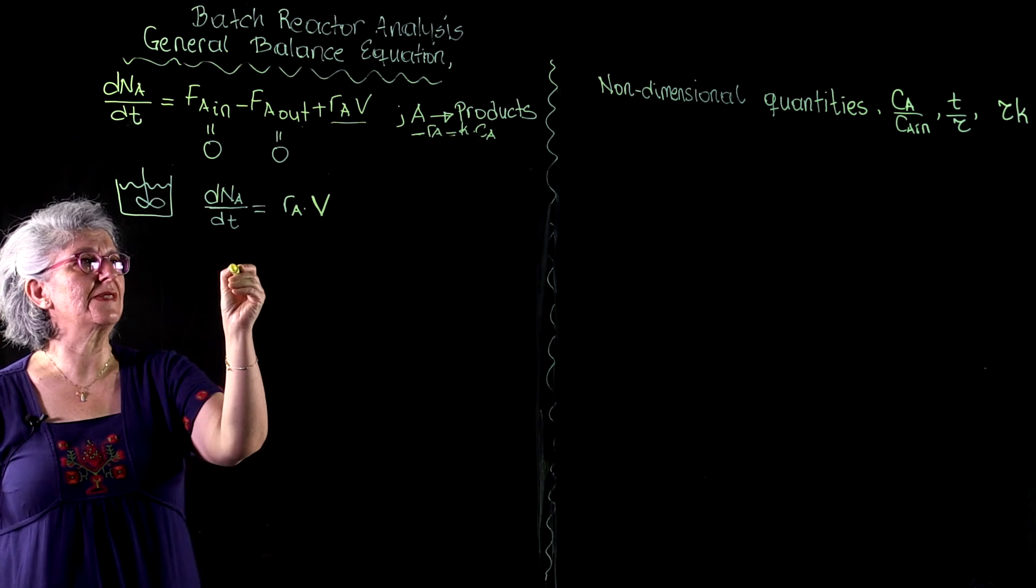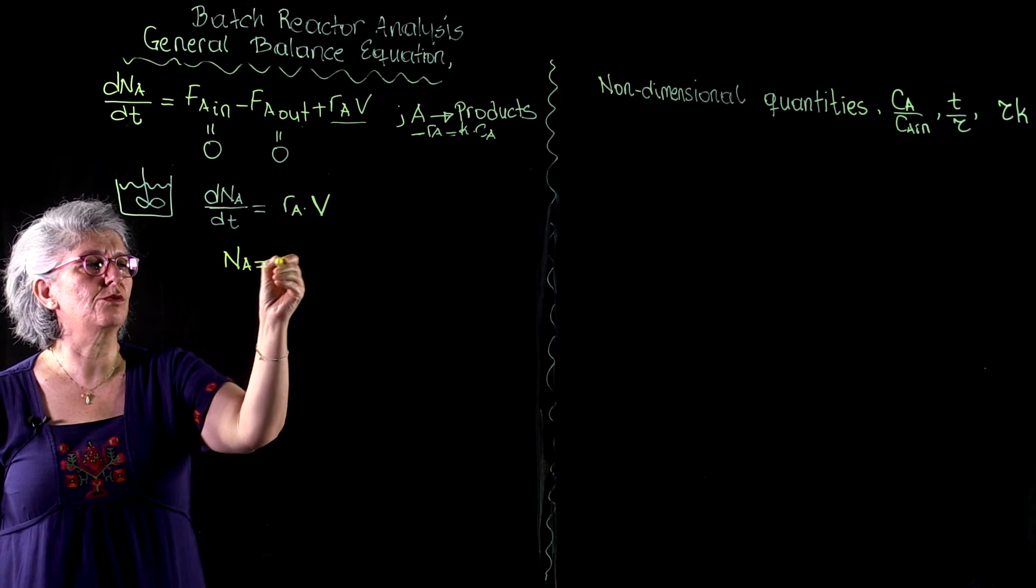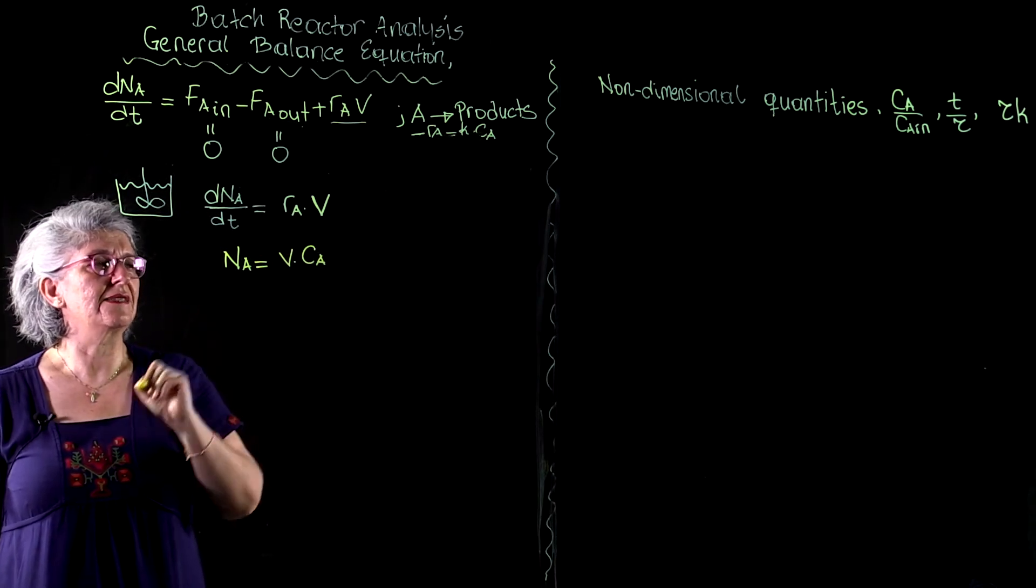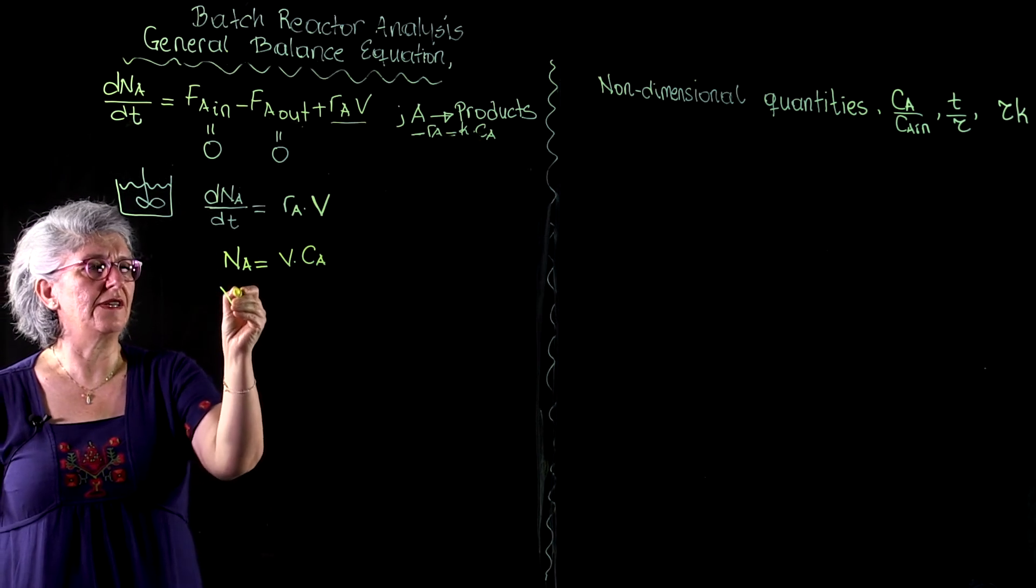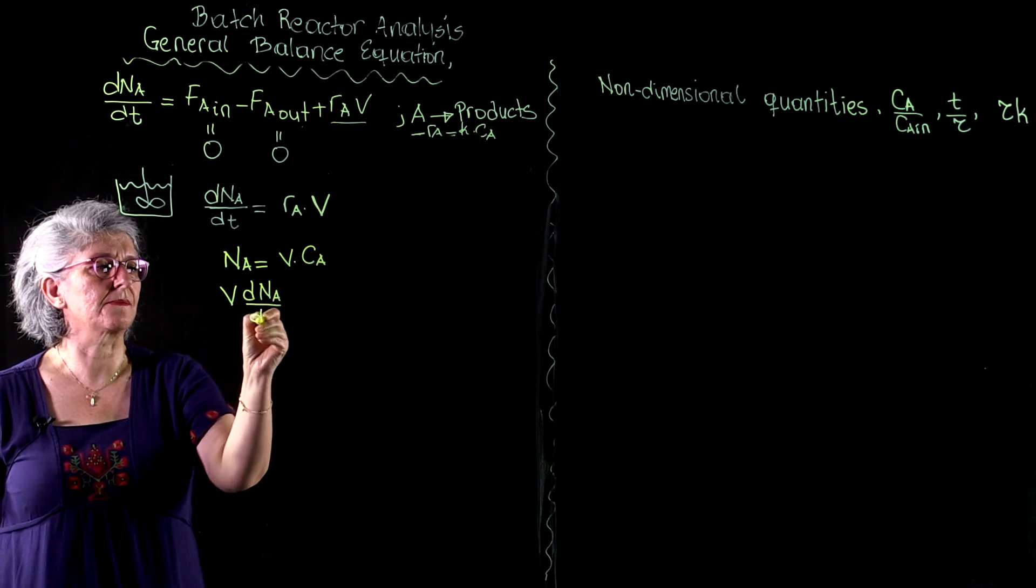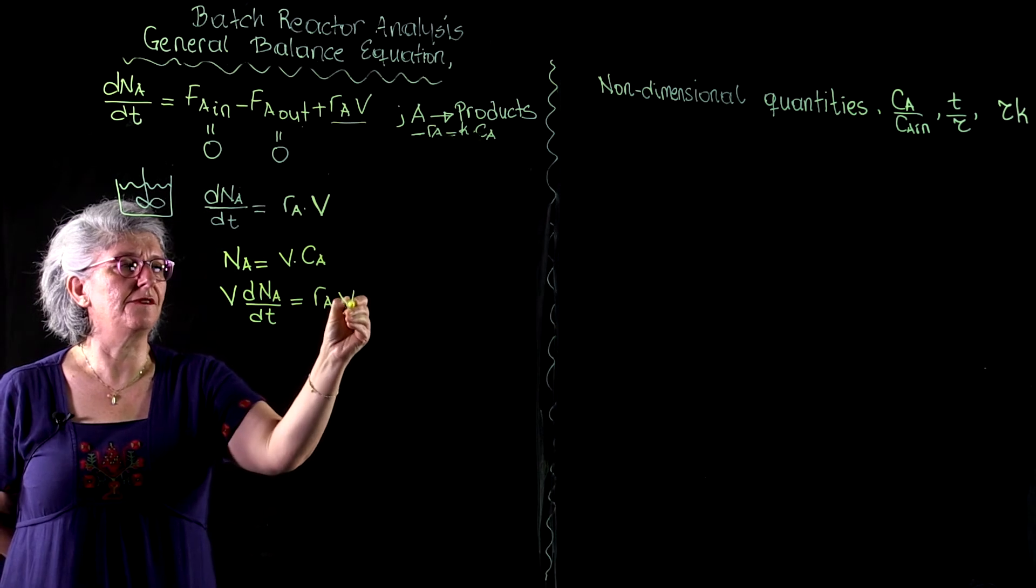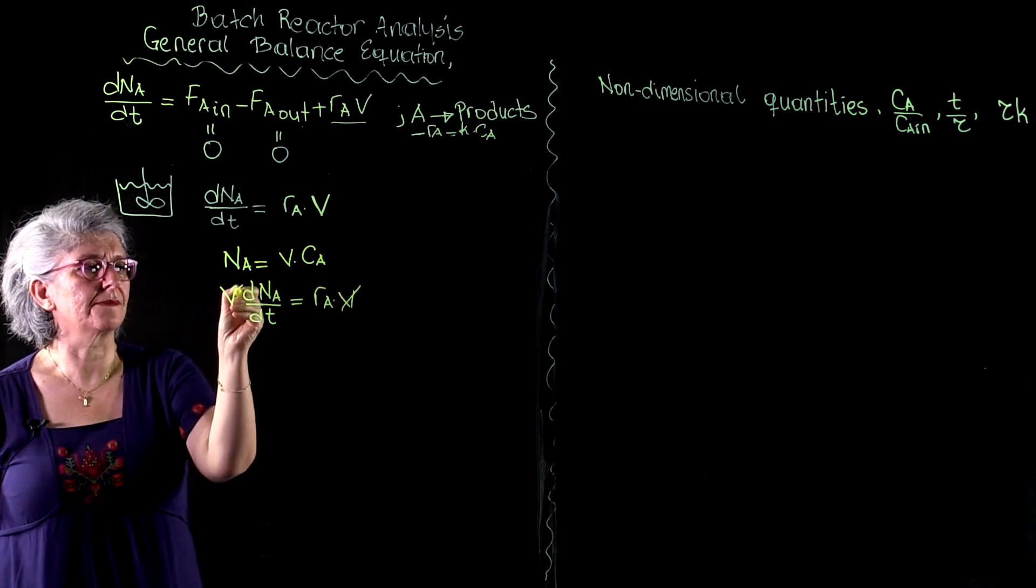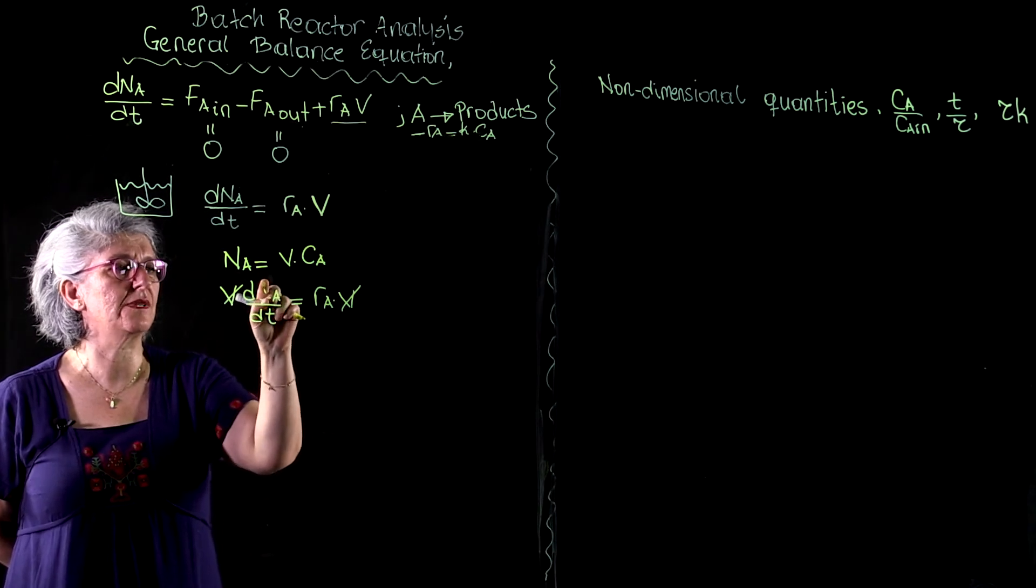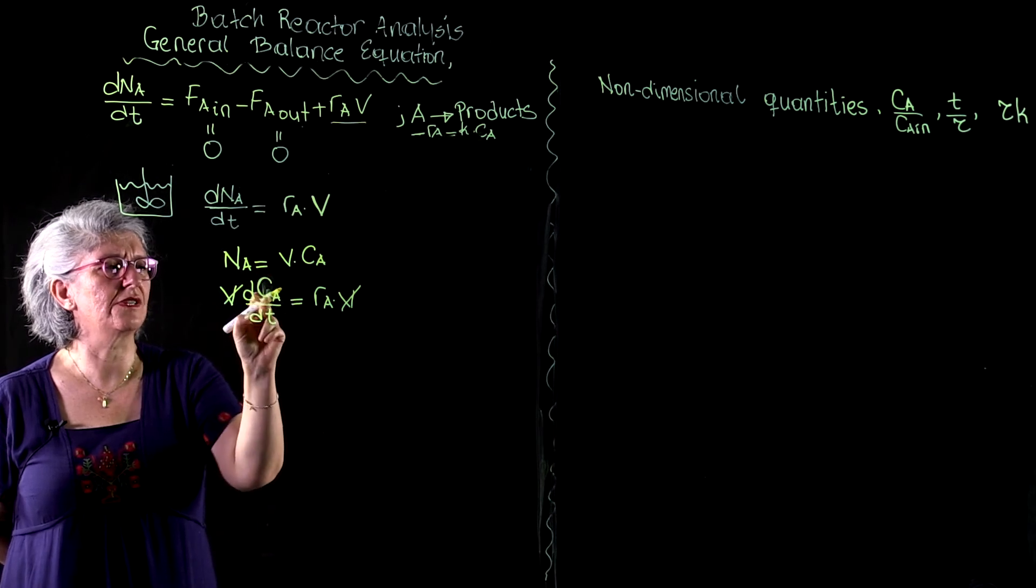And since volume doesn't change, our definition of Na, which is equal to V times Ca, simplifies. V times dCa over dt equals Ra times V. V cancels. I'm sorry, this is supposed to be dCa over dt.